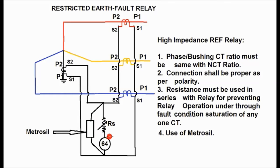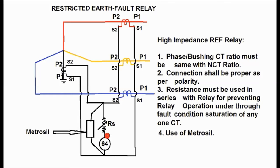It is connected to the restricted earth fault relay, designated as 64. A high impedance is connected in series with the relay — that is why it is called the high impedance relay. The function of the high impedance is to prevent tripping and provide stability during through-fault conditions if any of the neutral CT, phase CT, or bushing CT saturates. Since high impedance is connected in series with the relay, a voltage spike may occur during internal fault conditions, so a varistor is connected across the relay and resistance combination to avoid damage.